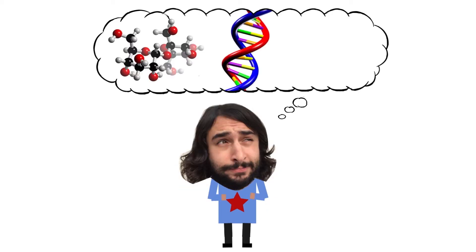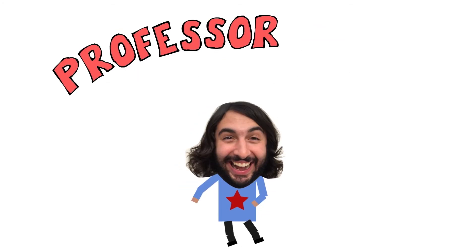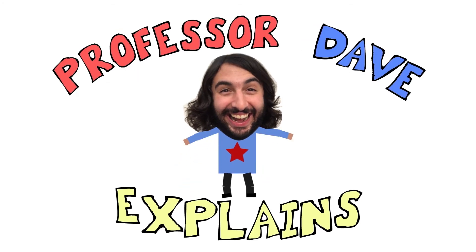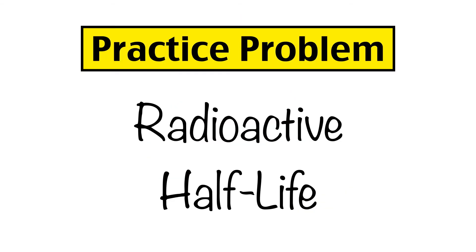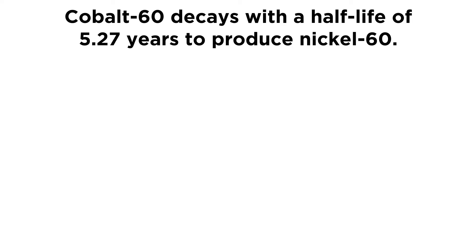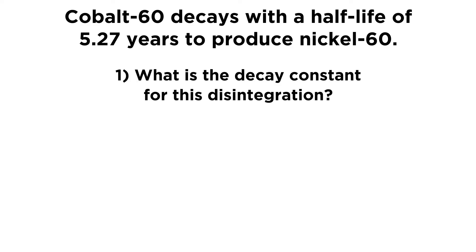Professor Dave Explains will walk us through a problem regarding radioactive half-life. Cobalt-60 decays with a half-life of 5.27 years to produce nickel-60. The first question is: what is the decay constant for this disintegration?